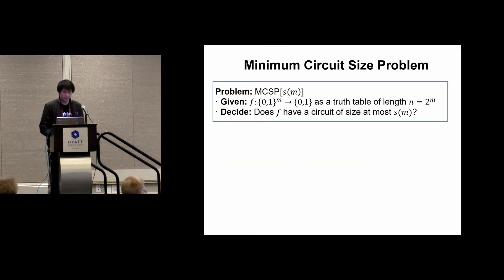I'll first give the definition of the minimum circuit size problem. The MCSP with a circuit size parameter S(m) takes as input an m-variable Boolean function encoded as a truth table of length n equal to 2^m, and we decide if f has a circuit of size at most S(m).